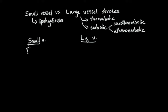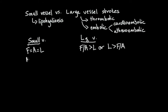To recap: in a small vessel stroke you generally get face equals arm equals leg weakness. In a large vessel stroke you get face and arm weakness greater than leg weakness, or leg greater than face and arm. Another differentiating feature is that in small vessel strokes you typically get either motor or sensory symptoms, whereas in large vessel strokes you get motor and sensory symptoms.